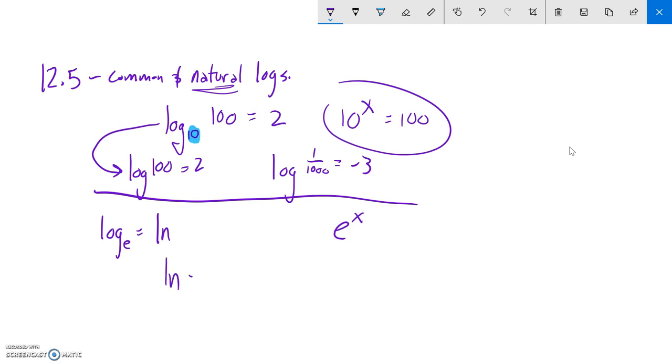So if I said natural log of e to the 5th, natural log means log base e of e to the 5th. In other words, e to what power is e to the 5th? It's 5.